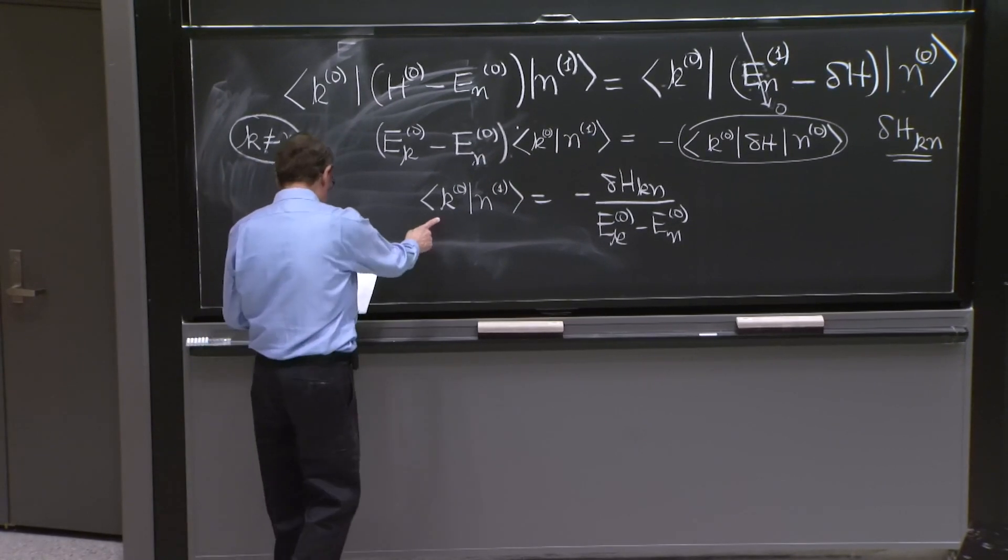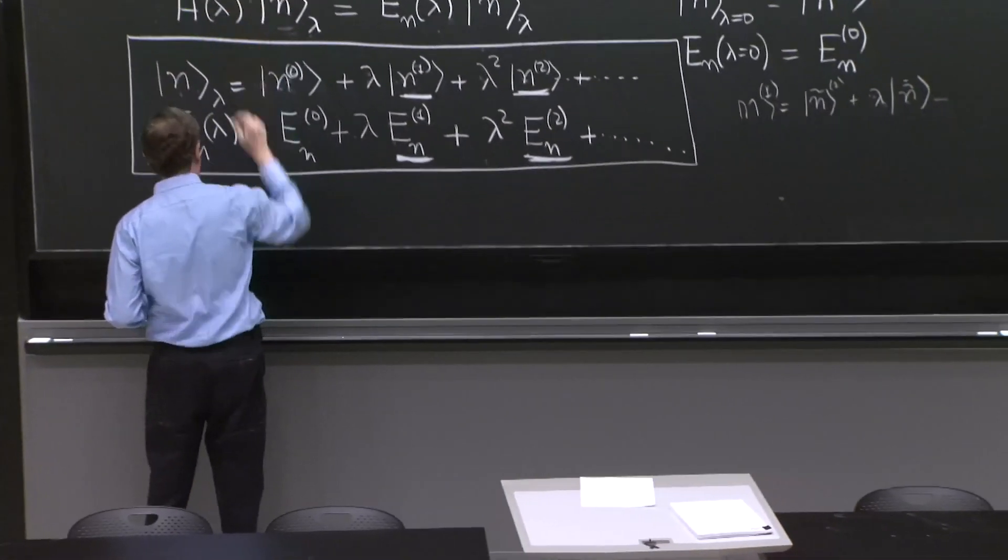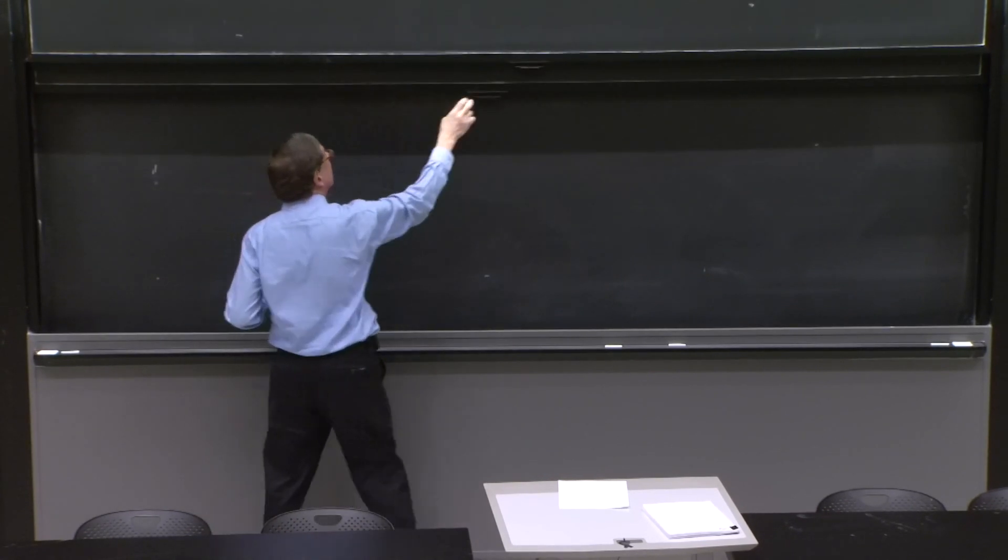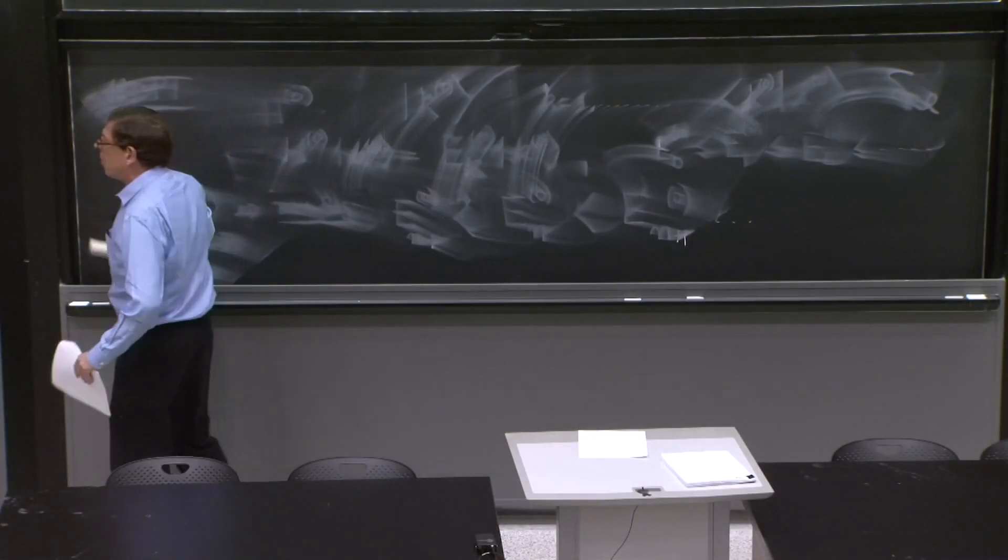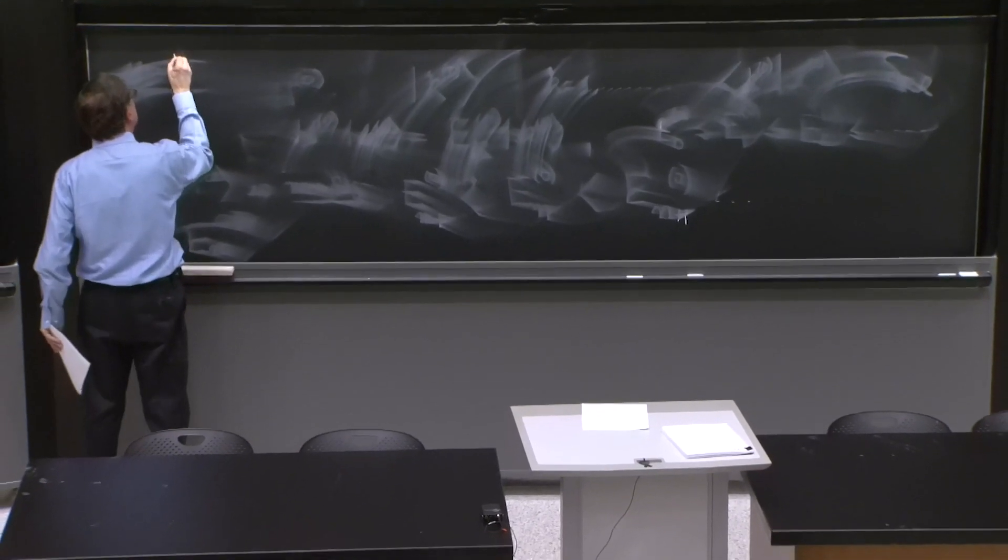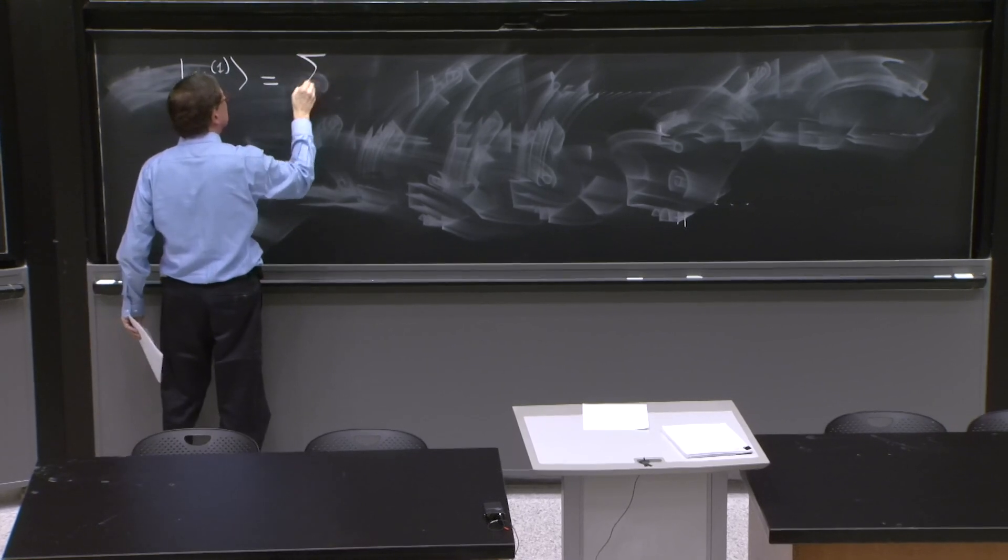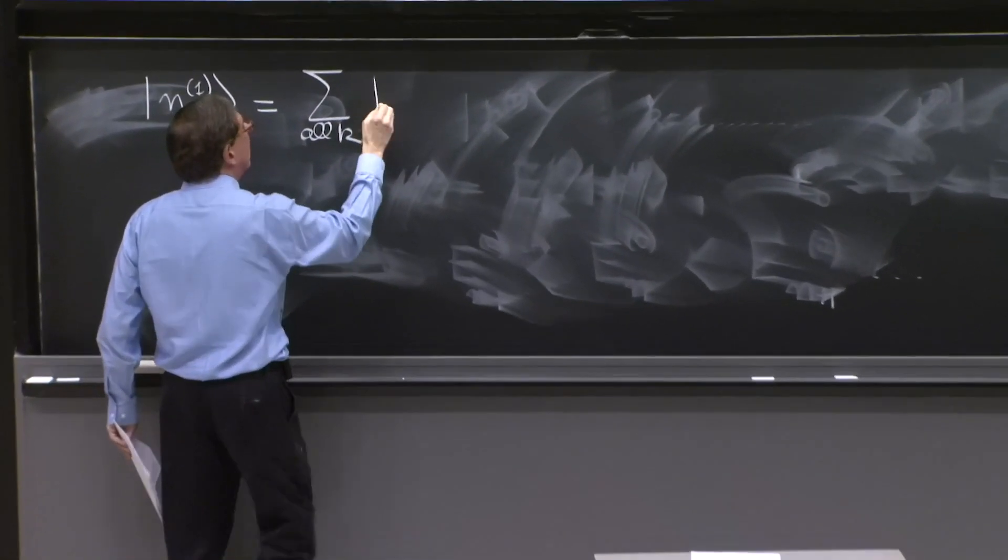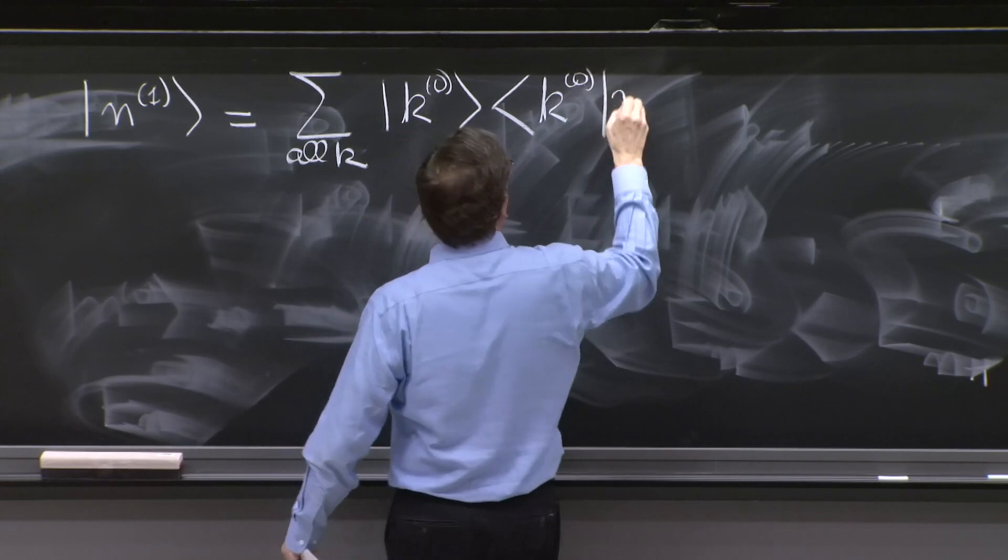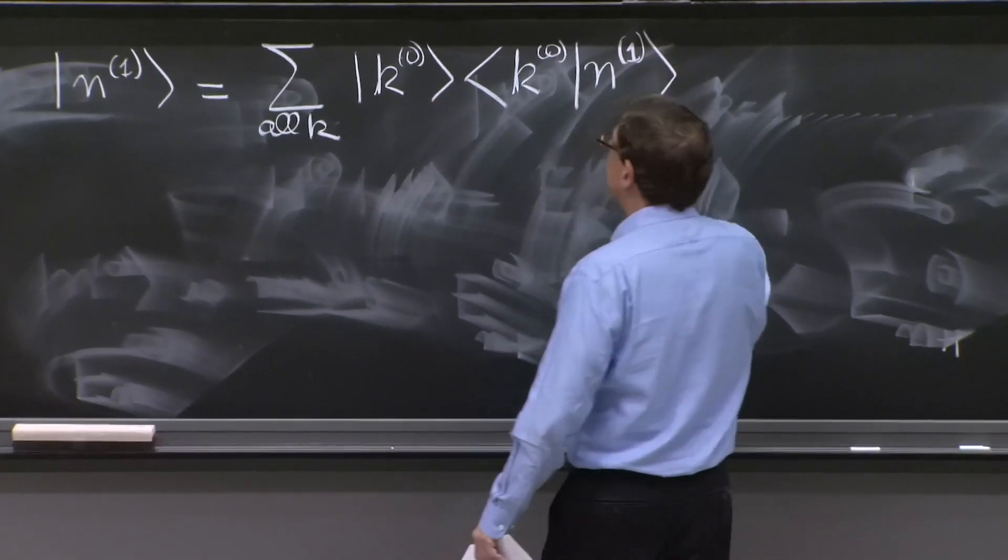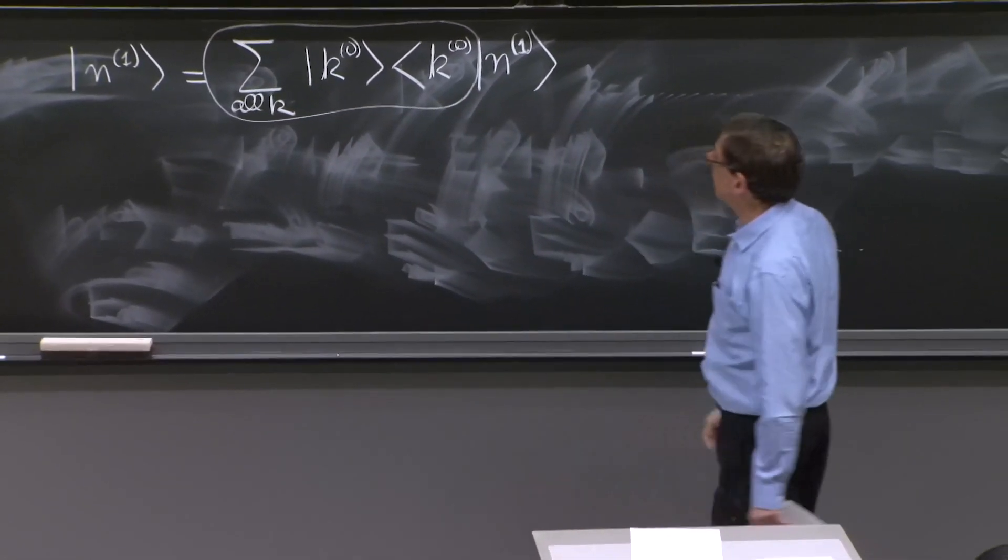So here is the solution for this thing. Now I can write the expressions for the state and the energy. So let me do it. So I have this n1 like that. You can say the following. Let me do this very deliberately first. n1 is equal to the sum over all k of k0, k0 n1. This is the resolution of the identity formula—that's the unit operator.